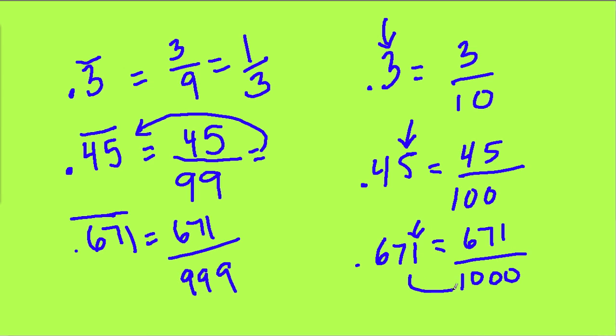Again, this is the thousandths place, so 1,000 goes down here. You could also think about it as being a third digit, so you choose a power of 10 with one, two, three zeros.